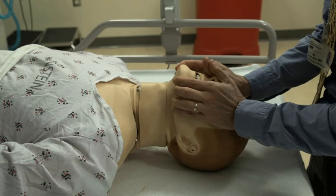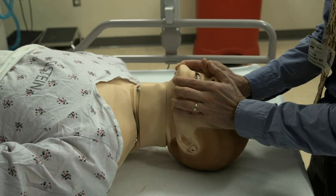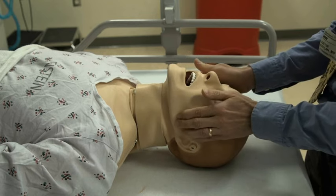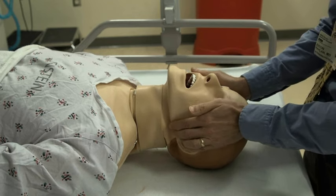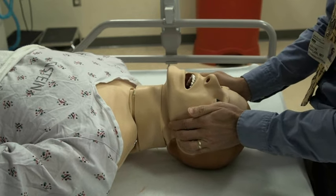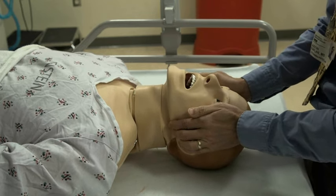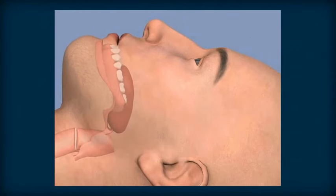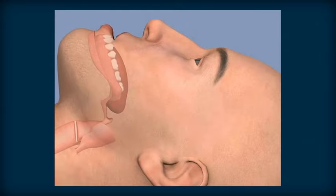The jaw thrust maneuver does not cause much motion of the neck and thus is preferred over the head tilt chin lift if there's a possible cervical spine injury. Stand at the head of the stretcher and place your palms on the patient's temples and your fingers under the mandible. Then lift the mandible upward with your fingers. This maneuver lifts the tongue along with the mandible, thus relieving upper airway obstruction.